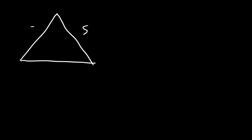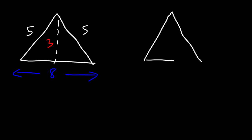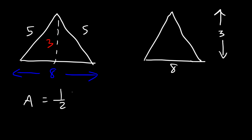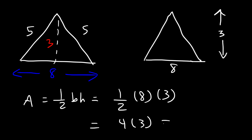So now let's draw the original picture. We have a height of 3 and a base of 8. All you need is the base and the height. Once you have it, you can find the area of the whole triangle. So it's one-half base times height. The base is 8, the height is 3. Half of 8 is 4, and 4 times 3 is 12. So the area is 12 square units.